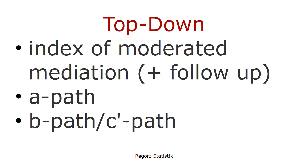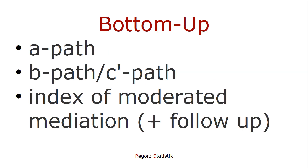If it's significant, we look at follow-up analyses, then at the model for the A path, and then at the model for the B path and C' path. If we report bottom-up, we start with the model for the A path, then go to the model for the B path and C' path, and then go to the index of moderated mediation.